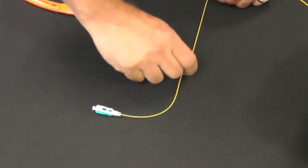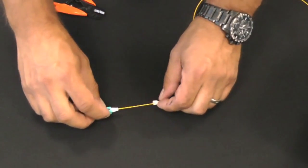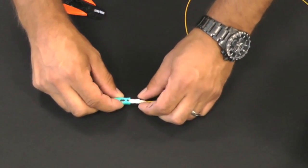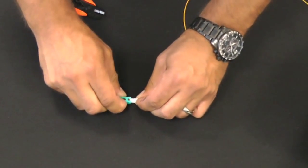Once the quality of the termination has been established, it is now time to finish the connector. Carefully slide the boot onto the connector to avoid damaging the fiber.